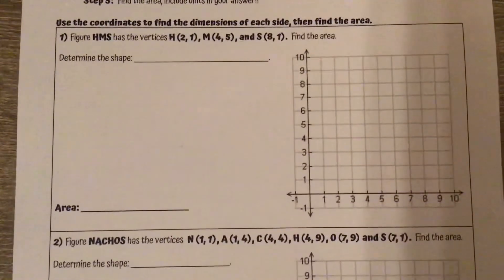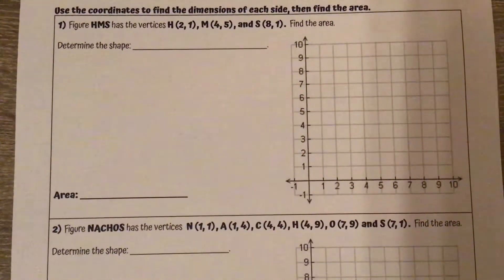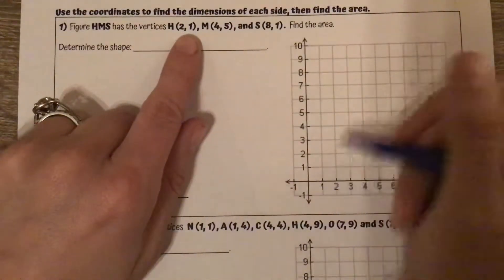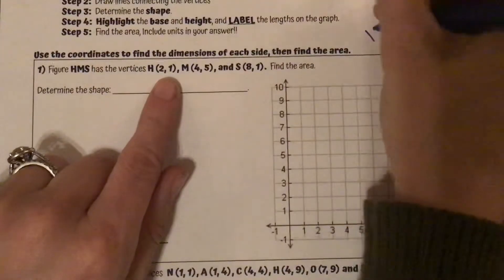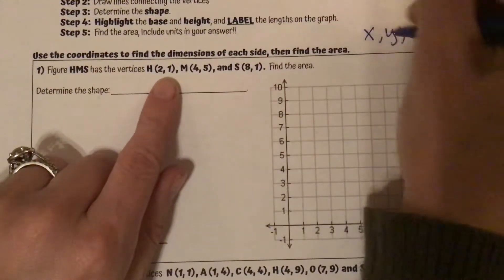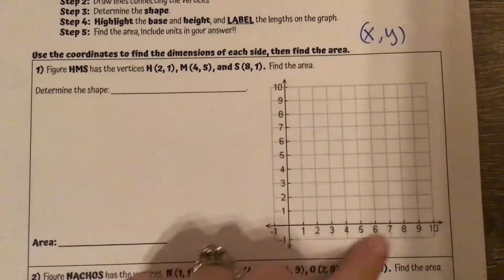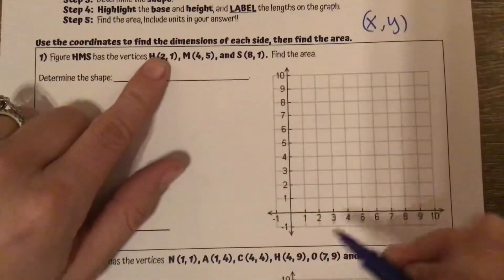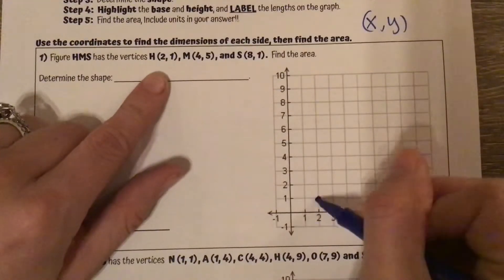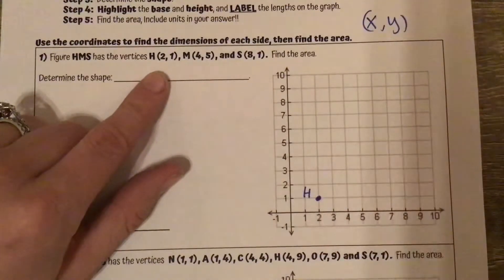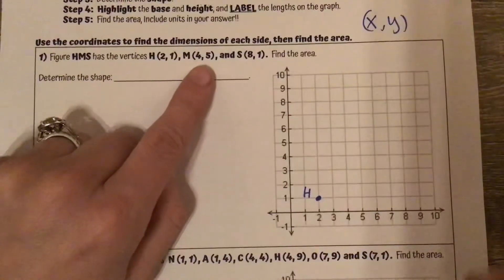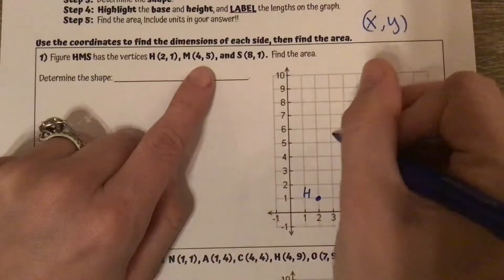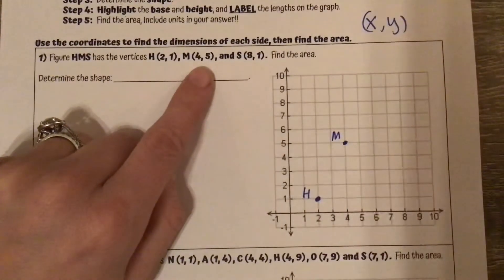Let's look at number one. Figure HMS has the following vertices. Let's plot them. Remember, we go X then Y — right or left first, then up or down. So, two, one: I'm going two to the right, one up. That is H. For M, we're going to go four to the right, five up. That's M.